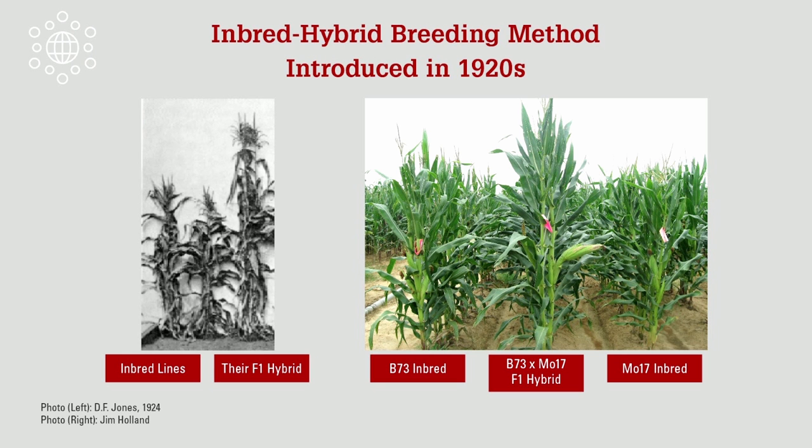When genetics was worked out scientifically in the early 1900s, scientists started thinking about developing inbred lines instead of working with this huge array of different plant types within a single population. Inbred lines are very weak — as shown in a paper by Jones in the 1920s, inbred plants are sad little plants making small ears that are not very productive. But they are very uniform within the lines, making it easy to replicate them across different fields and get good estimates of their productive ability.